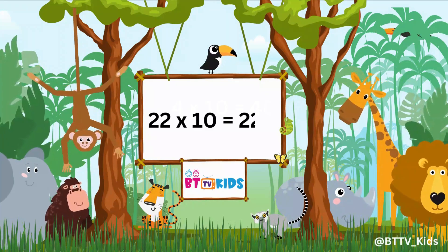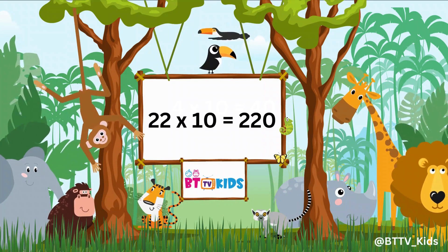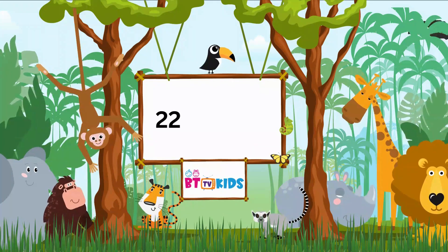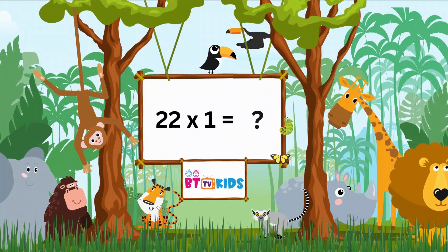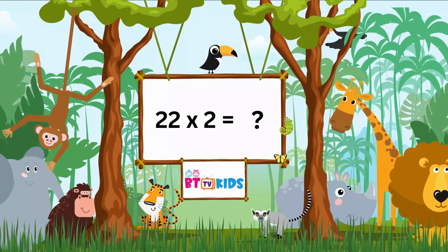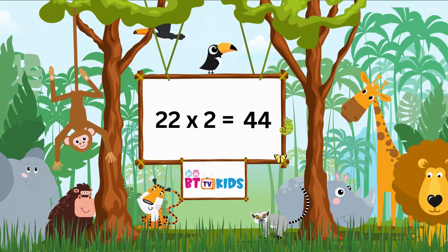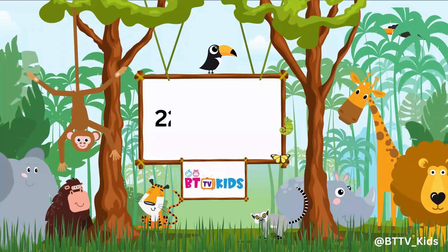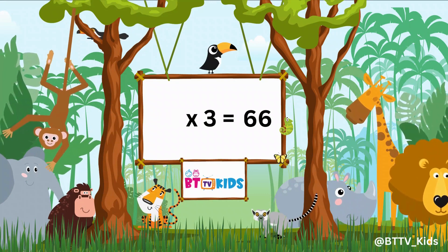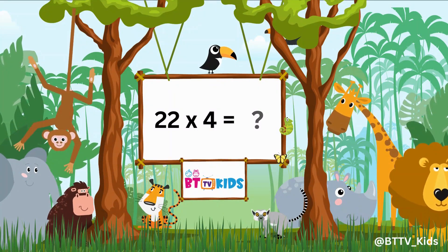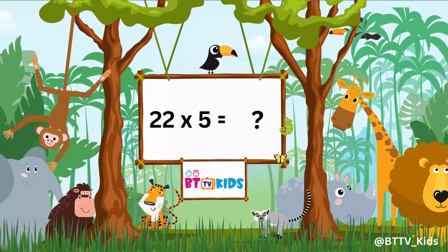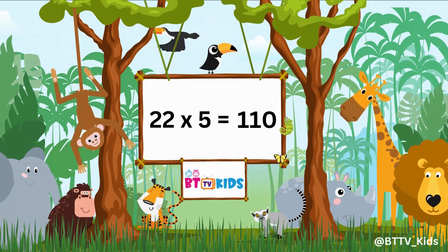Twenty-two tens are two hundred twenty. Twenty-two ones are twenty-two. Twenty-two twos are forty-four. Twenty-two threes are sixty-six. Twenty-two fours are eighty-eight. Twenty-two fives are one hundred ten.